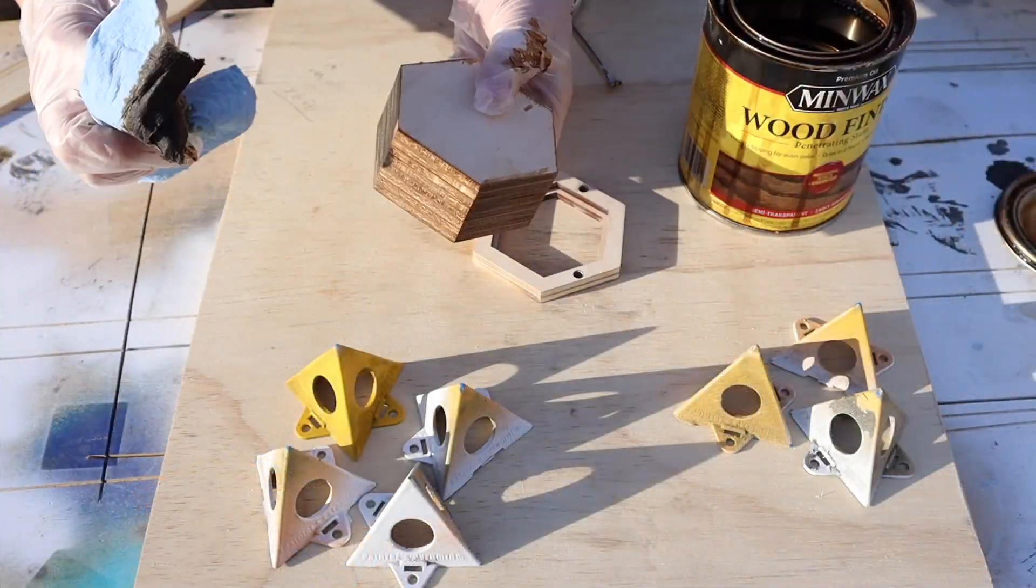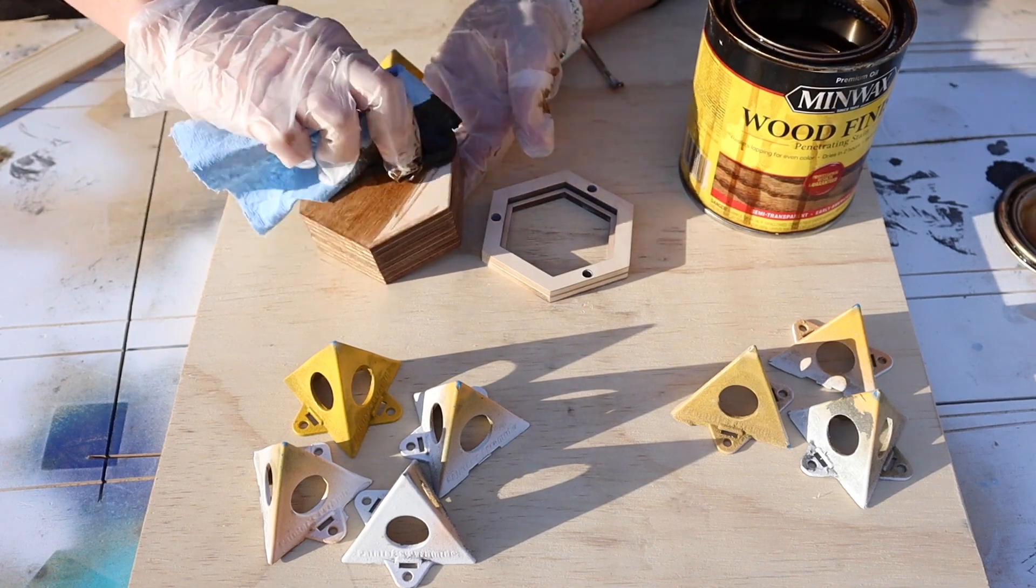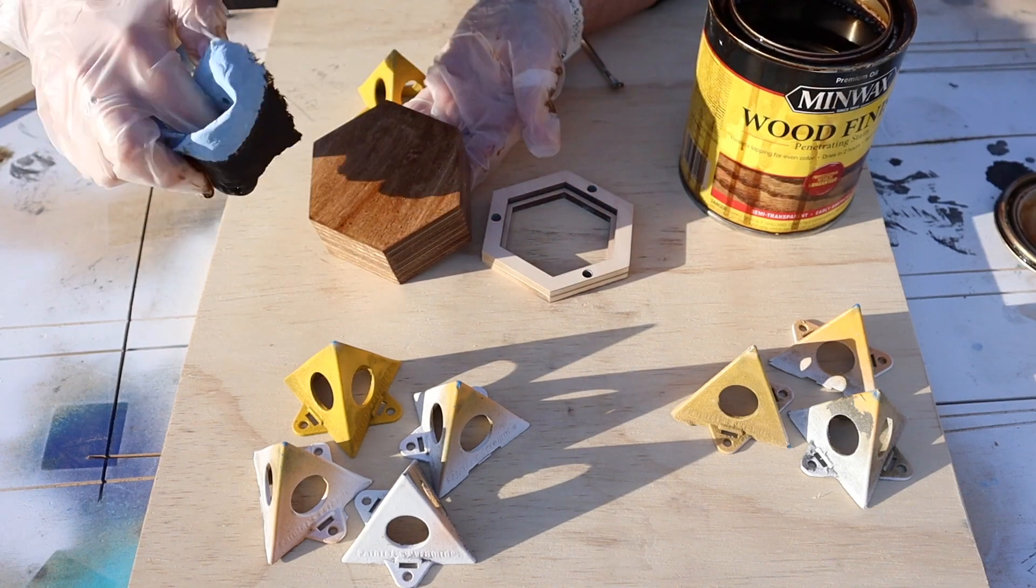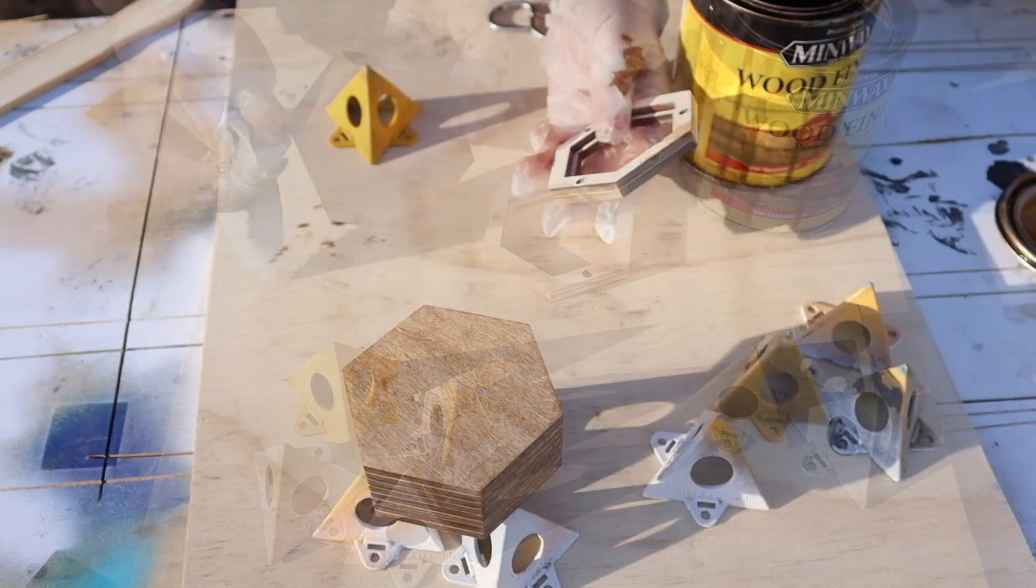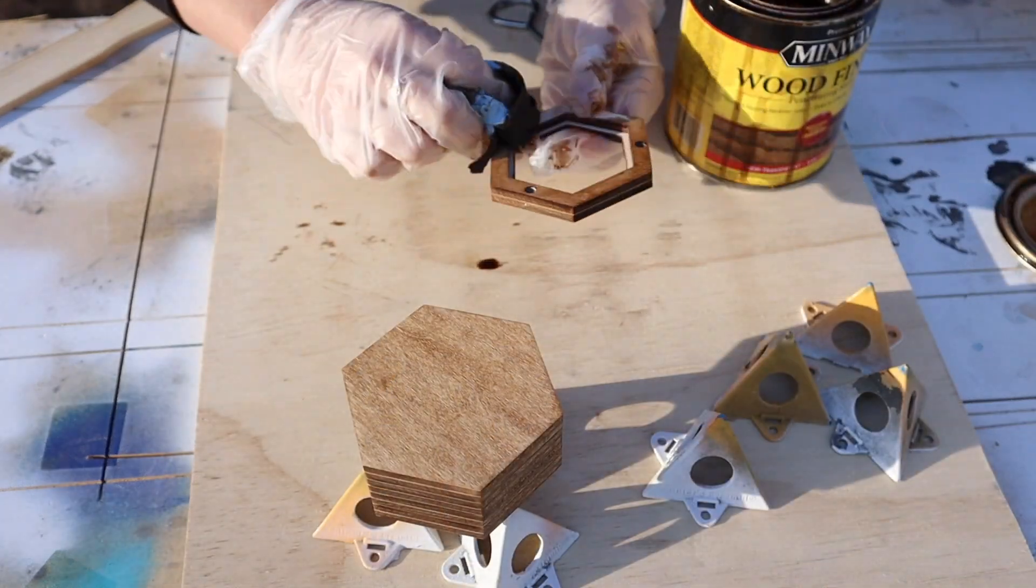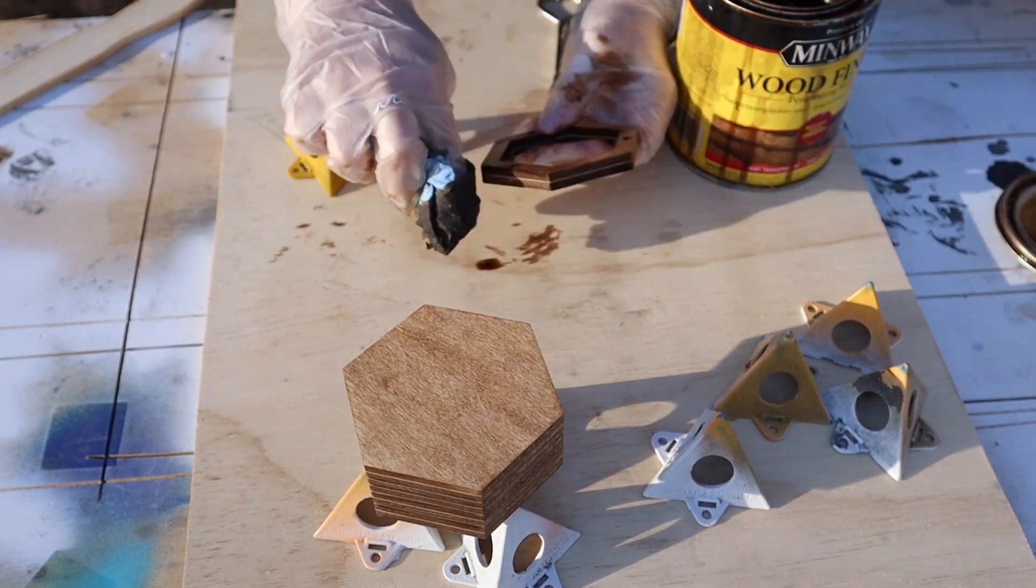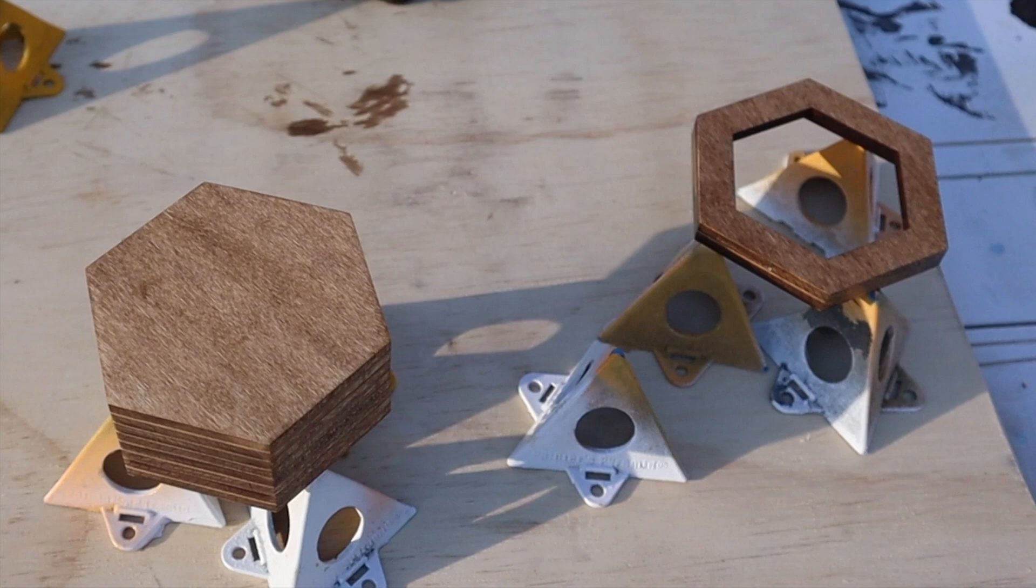Once all that was done, we of course wiped off all the sanding dust. And then we're using an early American stain, which is just a really nice golden color that doesn't have a lot of orange to it. So we wipe that on and we are using these little risers so we can stain everything top, bottom, sides, inside at one time. And so we let that set while we moved on to making the acrylic insert for the lid.